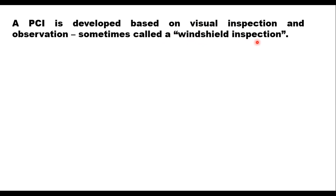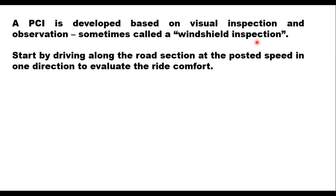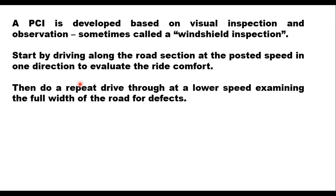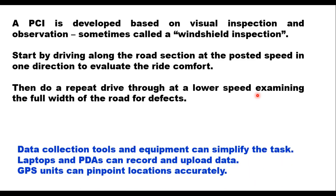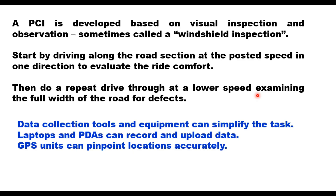Ideally two persons should do the inspection together — one driving while the other takes notes — and both evaluate the pavement as they go. Start by driving along the road section at a posterior speed in one direction to evaluate ride comfort, then do a repeat drive at a lower speed of approximately 10 to 50 kilometers per hour, examining the full width of the road for defects, noting the frequency and severity of specific surface defects. Both observers should also assess whether the road section is fulfilling its function.